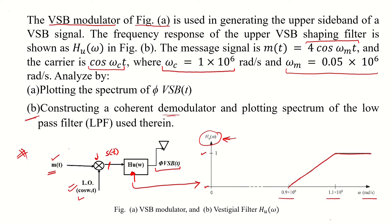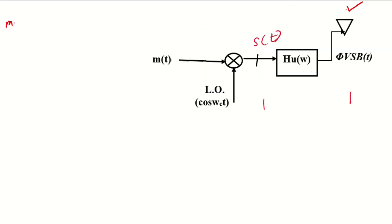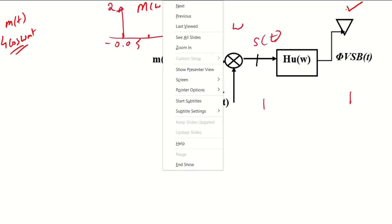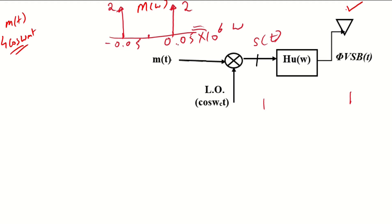For part A, let us reconstruct the VSB modulator block diagram. m(t) is simply 4·cos(ω_m t), and its spectrum M(ω) has two delta functions: one at +0.05×10^6 and another at −0.05×10^6. This is straightforward using Euler's identity: 4·cos(ω_m t) = 2e^{jω_m t} + 2e^{−jω_m t}.